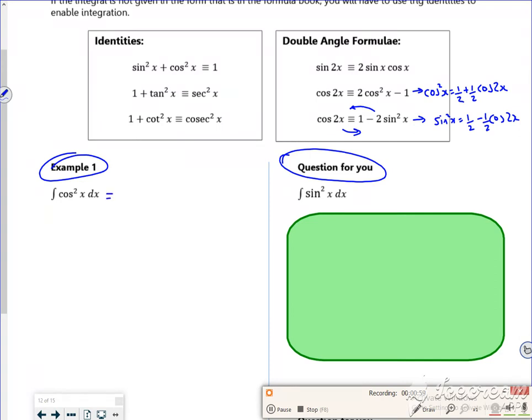So I'm going to change this integral, because it just doesn't work if you just add one to the power and divide by the new power and divide by the new bracket. It just doesn't work. So I'm going to replace the cos squared with a half plus a half cos 2x.